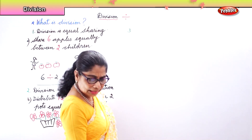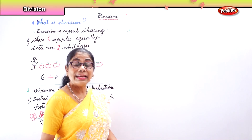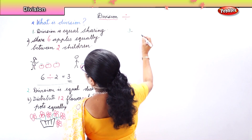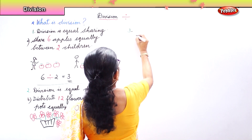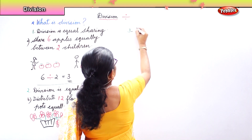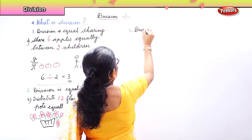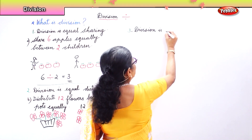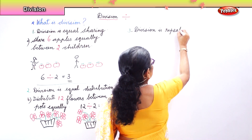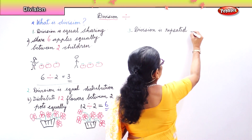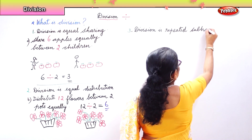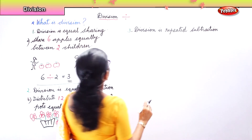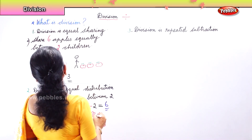The third one is: division is repeated subtraction. Division is repeated subtraction.